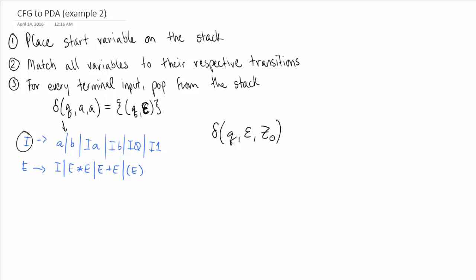Epsilon will have the empty stack, and we are adding our start symbol onto the stack. So we'll end up at state Q again, and we will have I followed by the empty stack symbol.